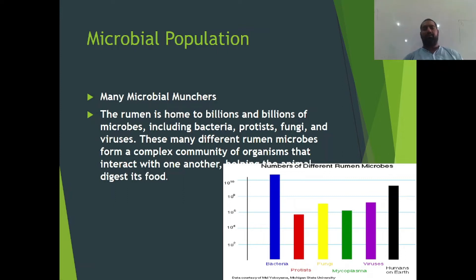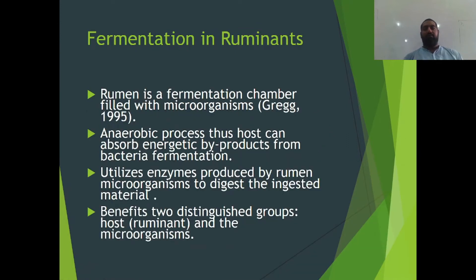The rumen is home to billions and billions of microbes, which include bacteria, fungi, and viruses. As you can see in this diagram, there are different populations of bacteria, fungi, mycoplasma, and viruses, with a comparison to humans. The rumen is a fermentation chamber, as discussed earlier, and is an anaerobic process. Hosts can absorb energetic byproducts from fermentation and utilize enzymes produced by rumen microorganisms to digest ingested food material, which benefits both the host and the microorganism.